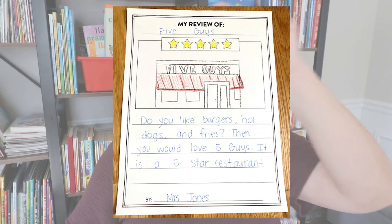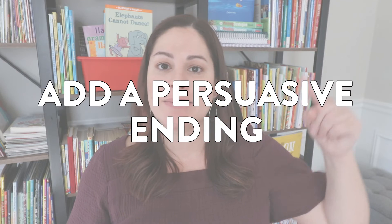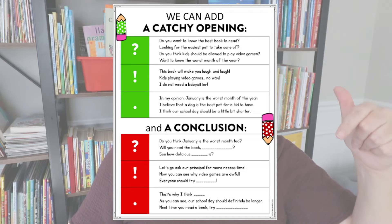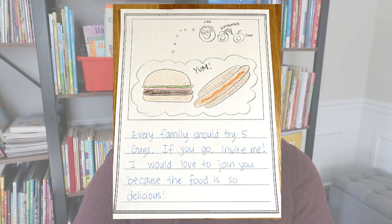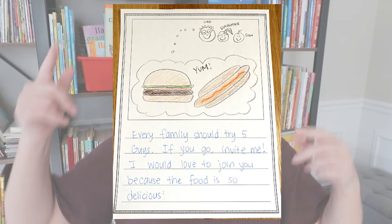The front page is also where students color in their five-star rating, say what they're reviewing, and write their name. Then the last thing students write is a persuasive ending, using the same anchor chart — asking a question, an exclamatory remark, or a statement. Here is my modeled example: 'Every family should try Five Guys. If you go, invite me! I would love to join you because the food is so delicious.' The illustration shows a dad, daughter, and son, letting the reader know it's family-friendly and they would definitely enjoy it.